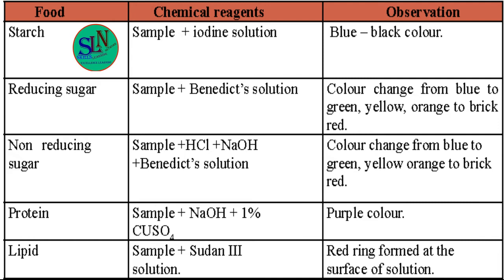For reducing sugar, after placing the sample we add Benedict's solution, then apply warming. The color changes from blue to green, yellow, orange, and then to a brick-red precipitate. For non-reducing sugar, we add hydrochloric acid to the sample, then sodium hydroxide, and then Benedict's solution — the color also changes from blue through green, yellow, orange to brick-red precipitate. For protein, the chemical reagents used are sodium hydroxide and one percent copper sulfate, and the expected observation is a purple color.